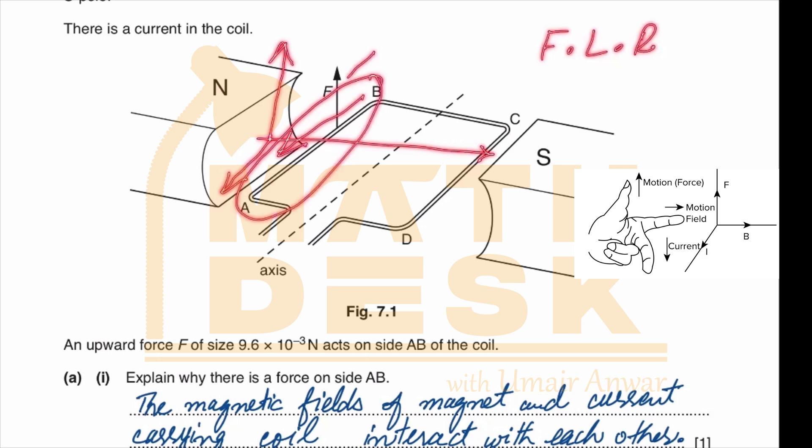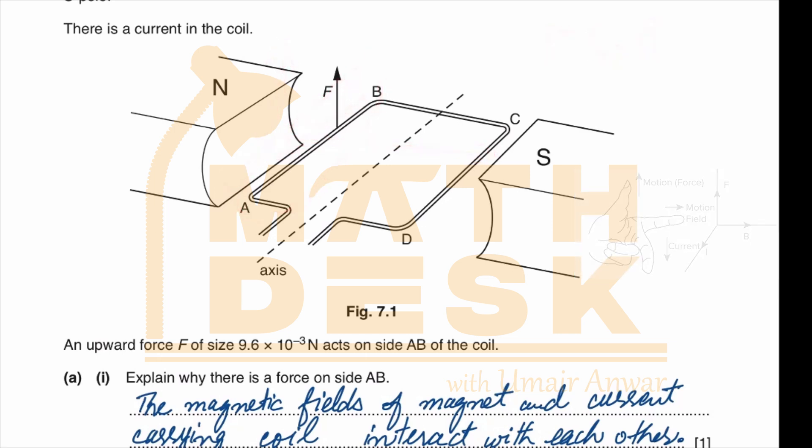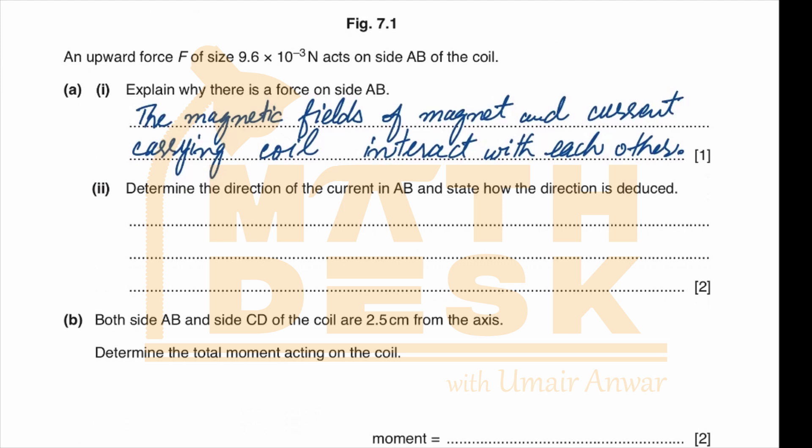The direction is from B to A. If we are specifically talking about AB, then the direction of the current is from B to A. The direction is from B to A.